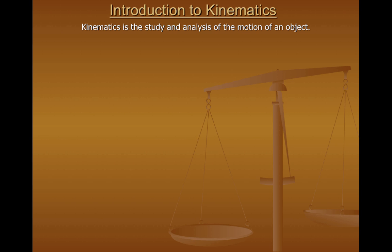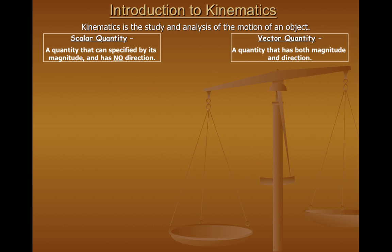When we're studying kinematics or even physics for that matter, there are two very important quantities you're going to have to know the difference. One is called a scalar quantity. A scalar quantity is one that can be described with magnitude only and has no direction. Whereas a vector quantity is a quantity that has both magnitude and direction.